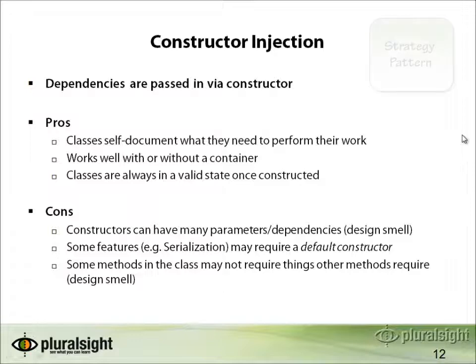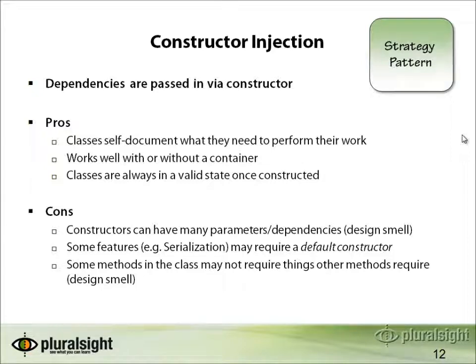Constructor injection is an instance of the Strategy Pattern — a very popular design pattern extremely useful in object-oriented programming. Dependencies are passed in via the constructor, which is being honest with callers by explicitly stating the things it needs to be in a valid state. The pros are that classes self-document what they need, it works well with or without a container, and classes are always in a valid state once constructed. A con is that constructors can end up with many parameters if there are many dependencies — a design smell that needs addressing.